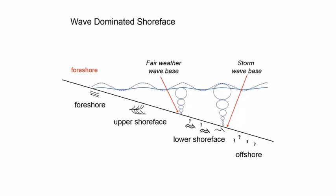We call the beach horizon the foreshore, and everything between the foreshore and the distal-most storm wave base is the shoreface. Fair-weather-affected cross-bedded horizons are the upper shoreface; hummocky cross-stratified beds of decreasing size going deeper are the lower shoreface; and bioturbated distal sediments are offshore. Applying Walther's Law, we stack foreshore on upper shoreface on lower shoreface, representing progradation in these wave-dominated shoreface deposits.